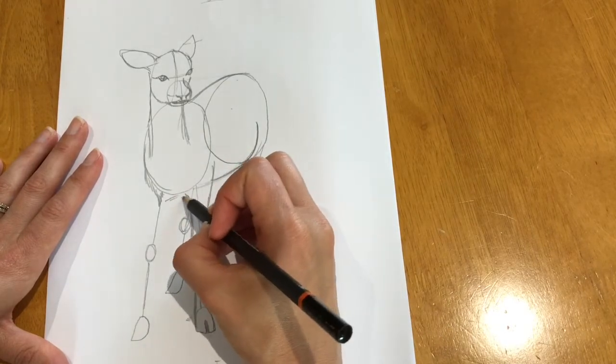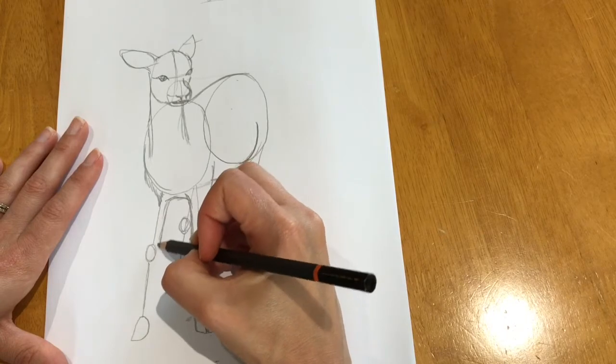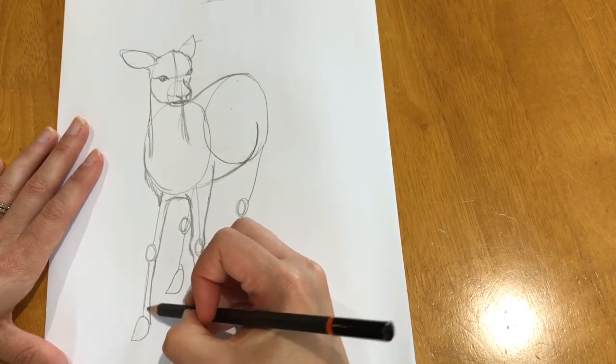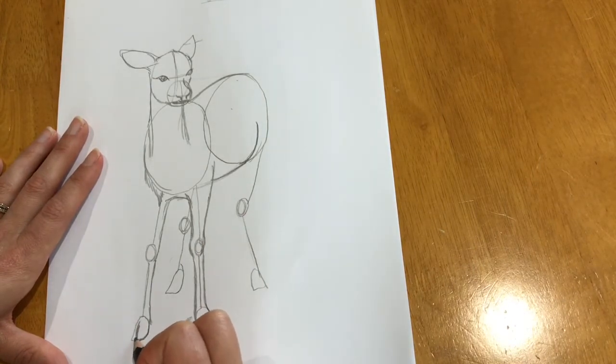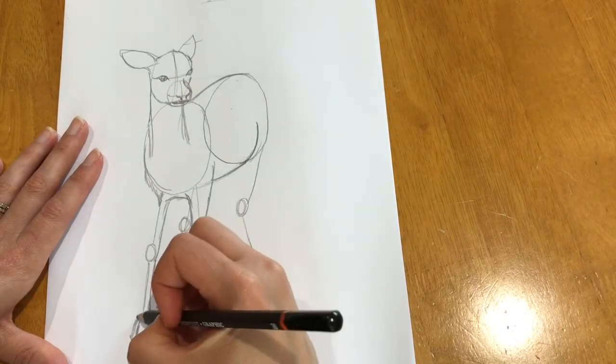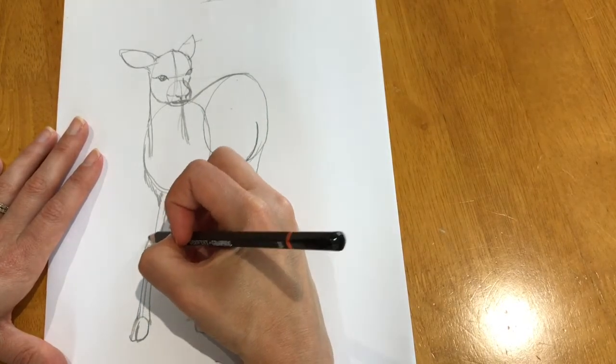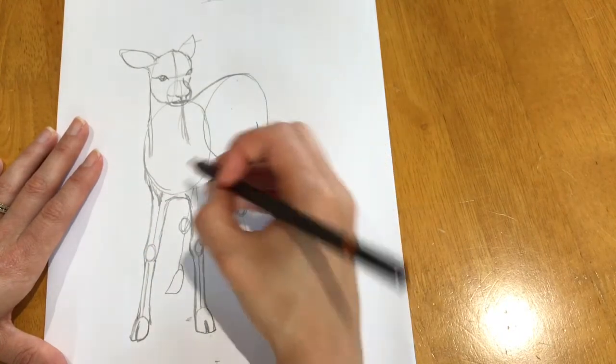Just draw two toes like that. And now the same on the other side. So onto the knee. Round. And then two toes on the hoof like that. And then up. And draw around the knee. And then up like so.